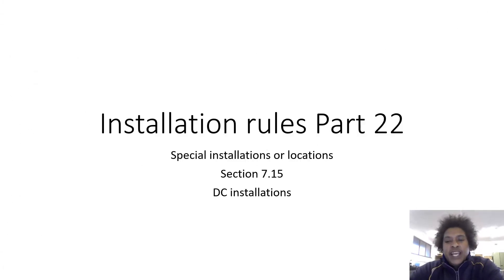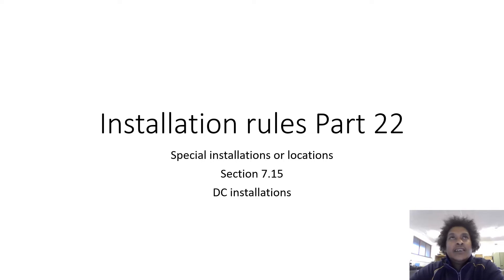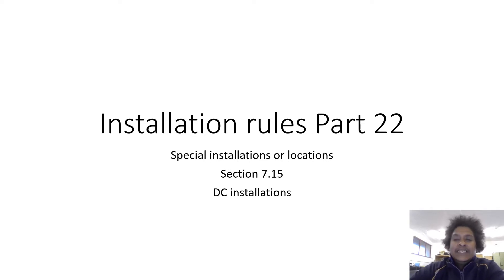Hi, my name is Brian Edson and welcome to our recording of installation rules, Part 22 — part of the Paper One installations curriculum. In this recording we focus on Section 7.15, which deals with special installations or locations, specifically DC installations.